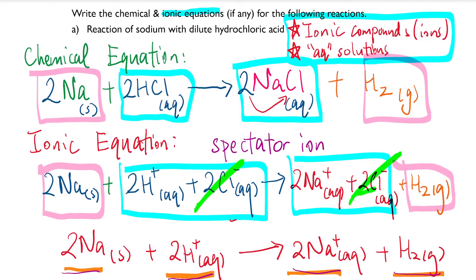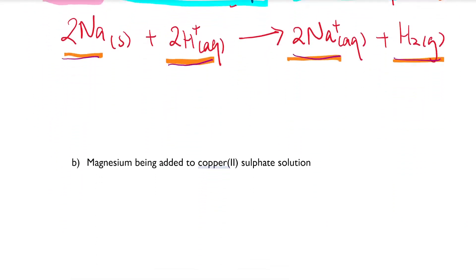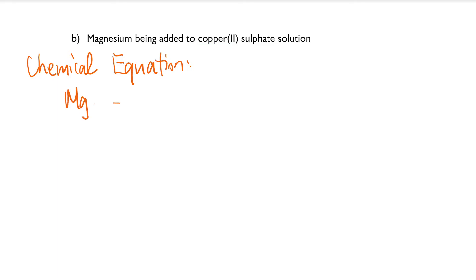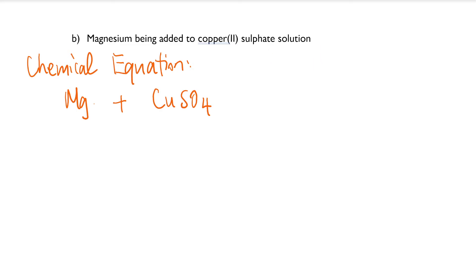So that's basically it. Reminder: ionic equations deal with ions — you'll see some charges — and we focus only on aqueous solutions. Solids, liquids, and gases remain the same. Now let's try the next one: magnesium being added to copper(II) sulfate solution. We always start with writing the chemical equation. We have Mg reacting with CuSO₄ — remember Cu²⁺ and SO₄²⁻. Using the cross method, this forms MgSO₄ plus Cu.